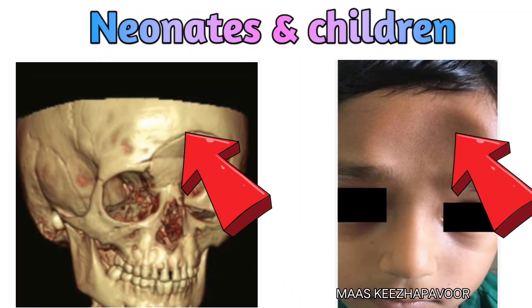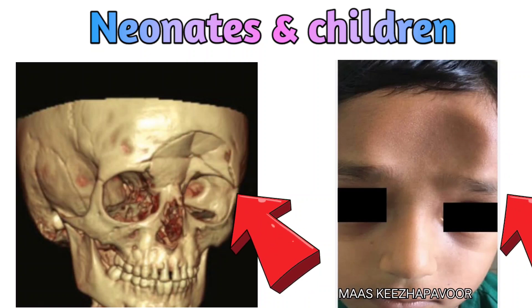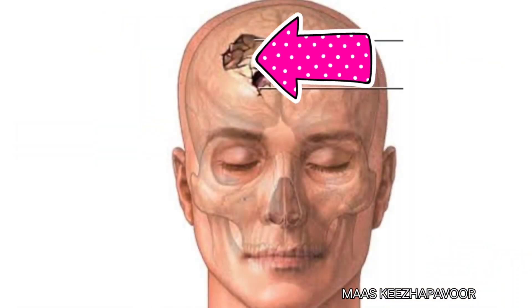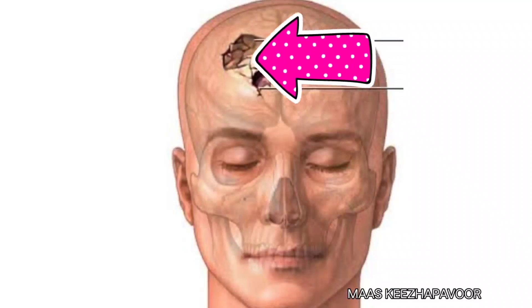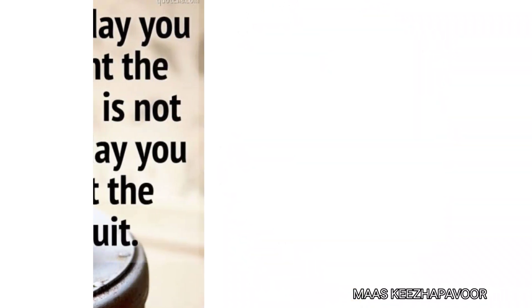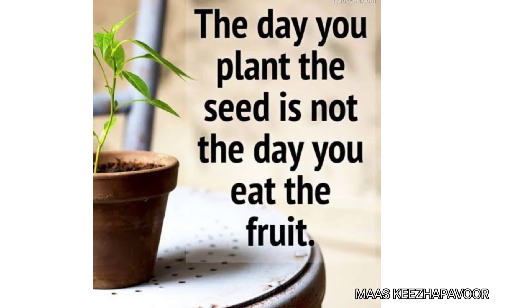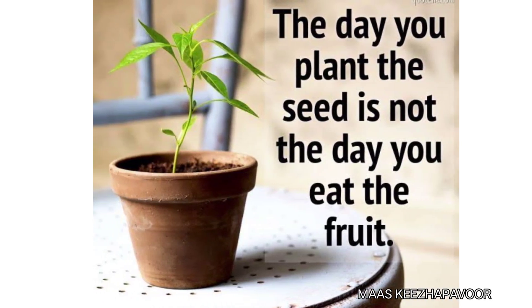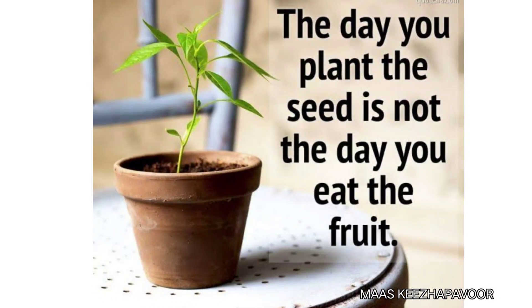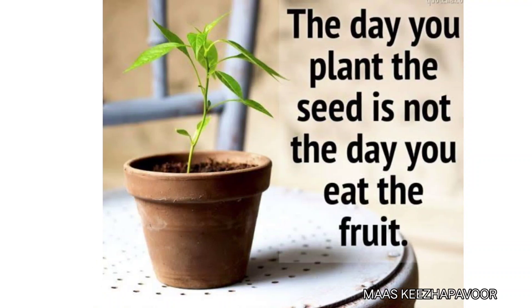The frontal squama is prone to fracture. In neonates and infants, it is a depressed fracture, i.e., a dimple in the bone. In adults, it is a fissured fracture, where the depressed area always shows an irregular line of fracture at its periphery. The day you plant the seed is not the day you eat the fruit. Thank you for watching.